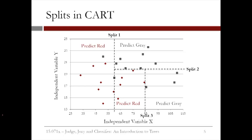If a new observation fell into one of these two subsets, then we would predict red, since the majority of the observations in those subsets are red. However, if a new observation fell into one of the other two subsets, we would predict gray, since the majority of the observations in those two subsets are gray.